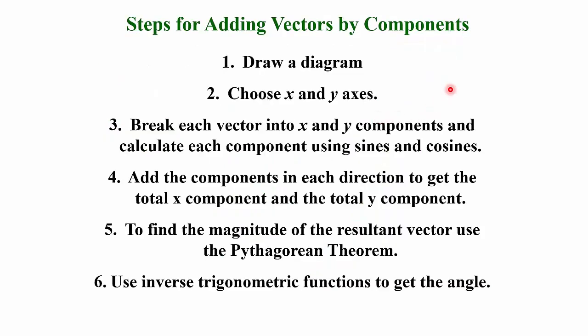The process for adding vectors using the component method: the first step is to draw a diagram. If you're not given drawings of the vectors but are told the magnitude and directions, sketch those vectors out. You also need to pick your X and Y axis — typically horizontal and vertical, though later in physics we'll tilt our axes for things like inclined planes. Once sketched, you then break the vectors into X and Y components and calculate those components using sines and cosines.